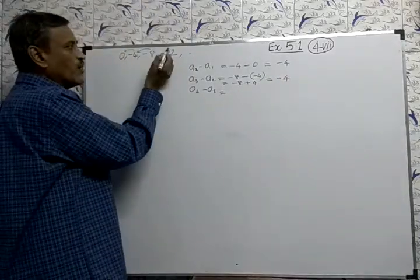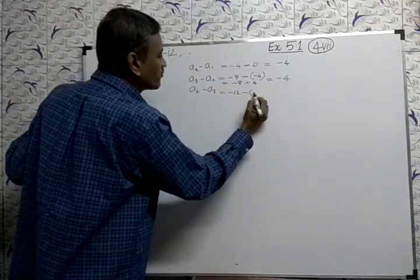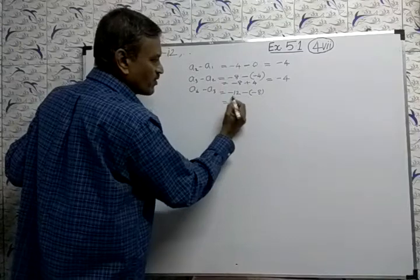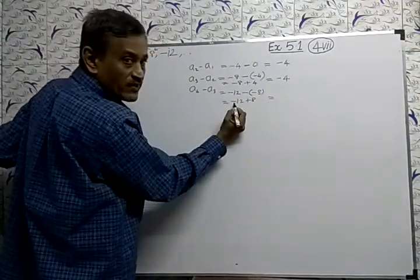a4 minus a3. Now here subtract: -12 minus (-8). So -12 plus 8, bigger size minus, so -4.